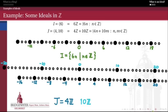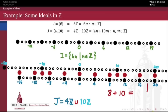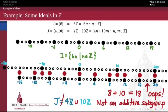One idea might be to just stick them together with a union. But the problem with taking the union of two ideals is that the union doesn't necessarily have to be an additive subgroup. For instance, 8 belongs to this union and 10 belongs to this union, but their sum 8+10 = 18 doesn't belong to this union. So this isn't even an additive subgroup, and therefore the union of these two ideals is not an ideal at all. The ideal J we're thinking of is definitely not the union of 4Z with 10Z.